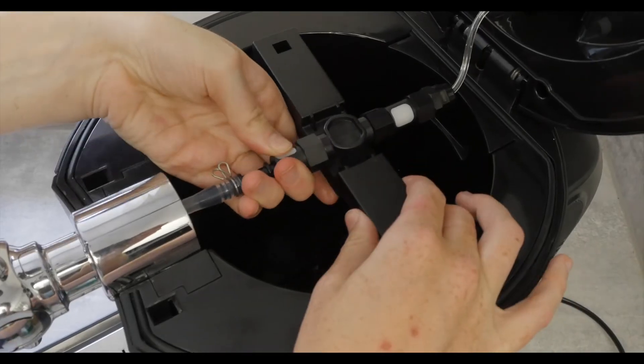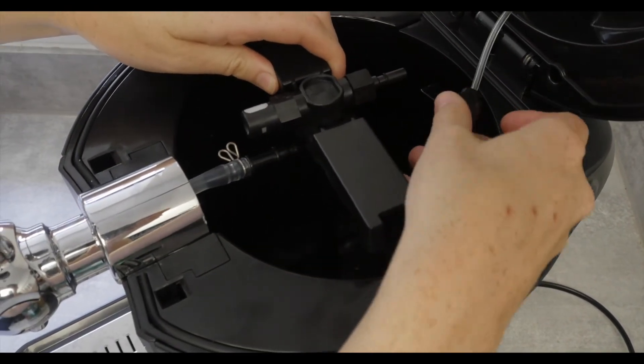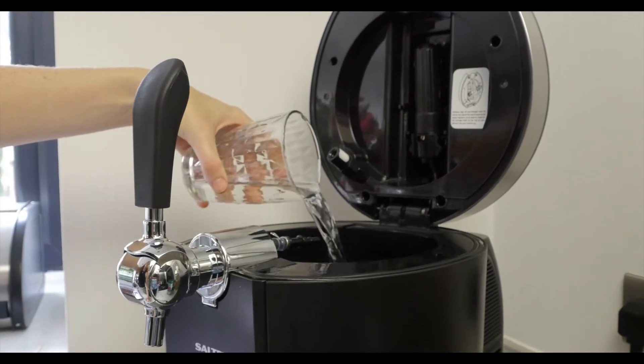Press the white release buttons and disconnect the tubes to remove the keg pacing tube from the unit. Fill with cold water to the max fill line.